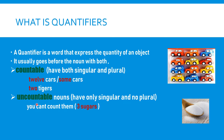Only when you find out the countable and uncountable, you will know what quantifiers could be used in a better way. Countable nouns have both singular and plural — for example, 12 cars and some cars, two tigers. Uncountable nouns have only singular and no plural, because you cannot count them.